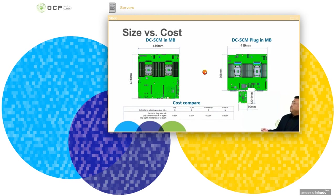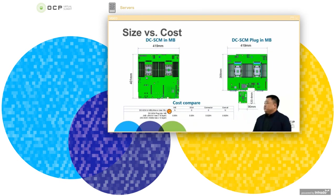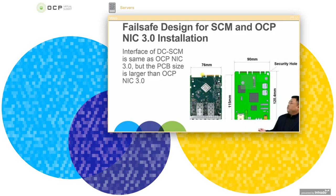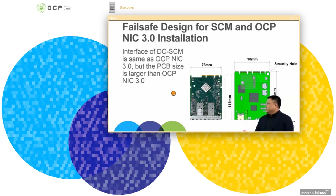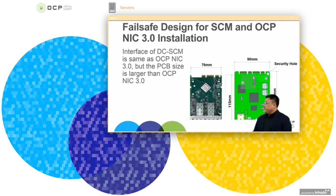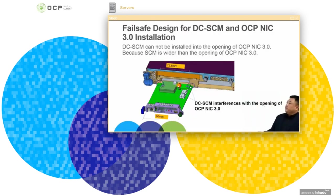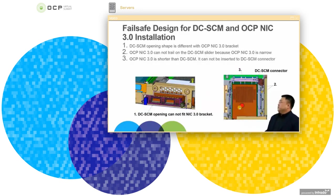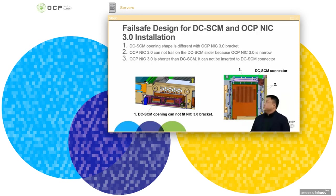How about size and cost? If we design SCM, we can reduce around 10% PCB cost because high-speed PCB material is very expensive. We also designed a physical fool-proof mechanism to avoid accidentally plugging an SCM into an OCP-NIC slot or an OCP-NIC card into an SCM slot. The SCM card is wider and longer than the OCP-NIC card — so if you try to plug SCM into an OCP-NIC slot, it won't fit; and if you try to plug an OCP-NIC into an SCM slot, the OCP-NIC card cannot reach the connector. This is our fail-safe design.